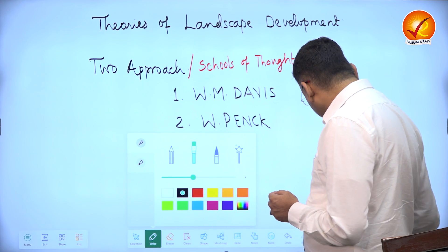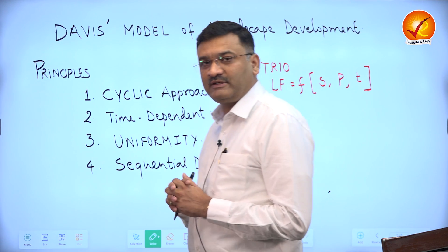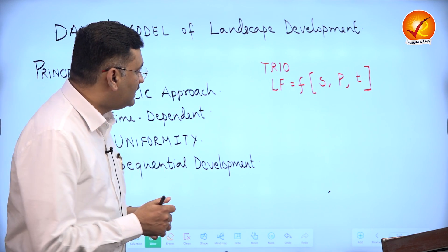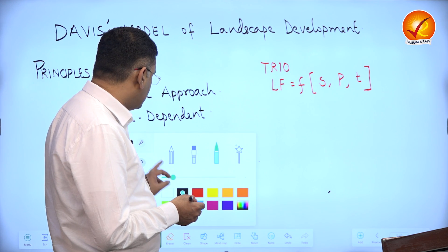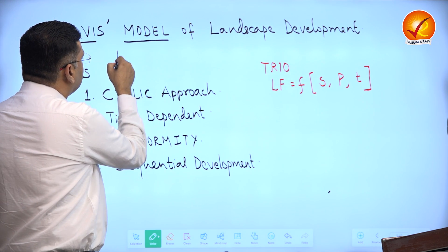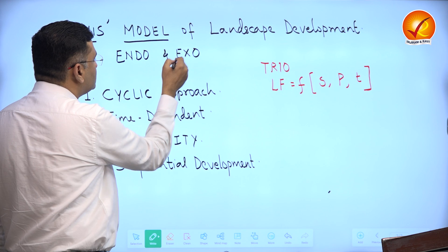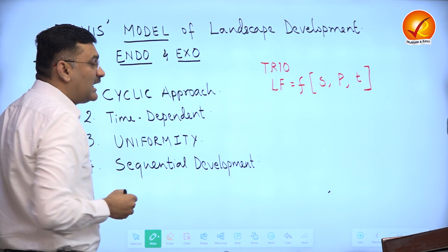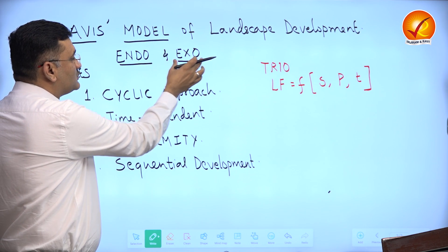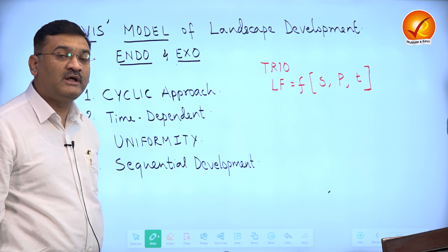The first approach is the Davisian model of landscape development. Davis based his theory on the concept of static equilibrium, where he separated the operation of endogenetic and exogenetic forces. In the Davisian model, endogenetic and exogenetic forces do not operate simultaneously. He gave importance to the exogenetic force, while the endogenetic forces operate for only a very short duration.